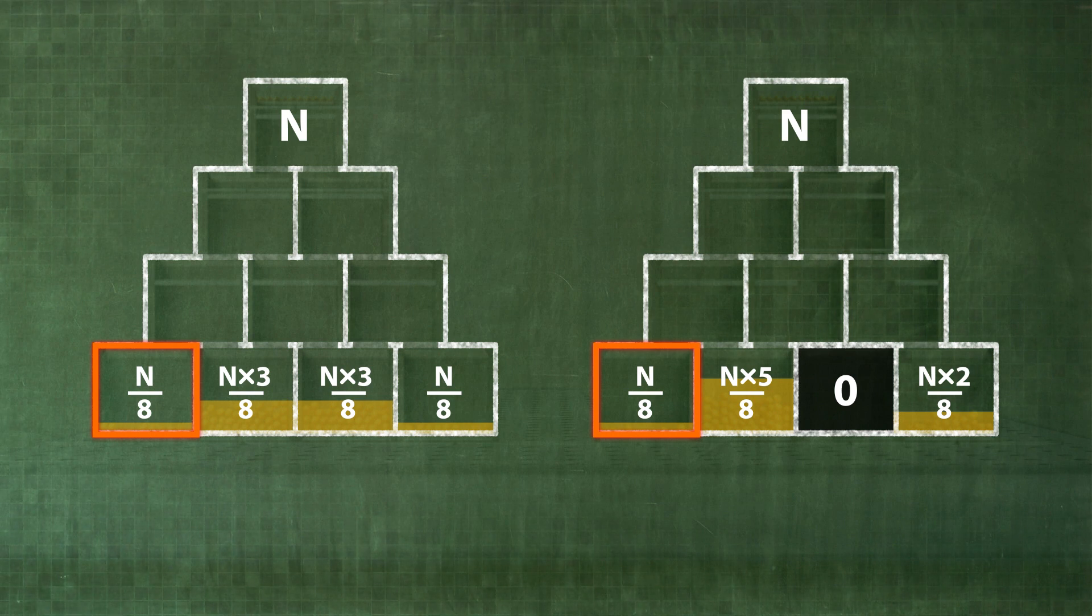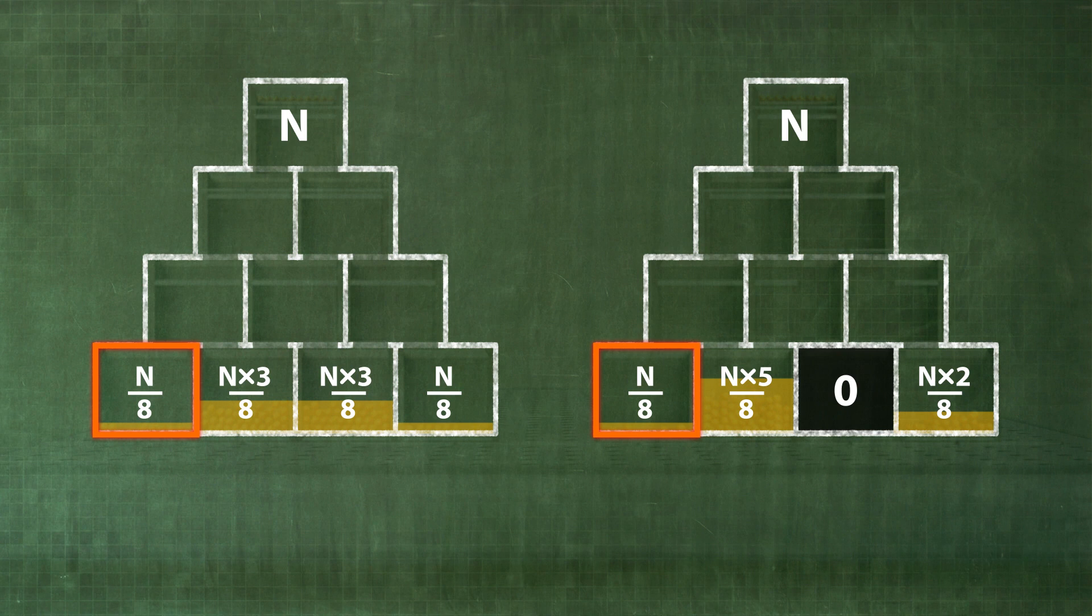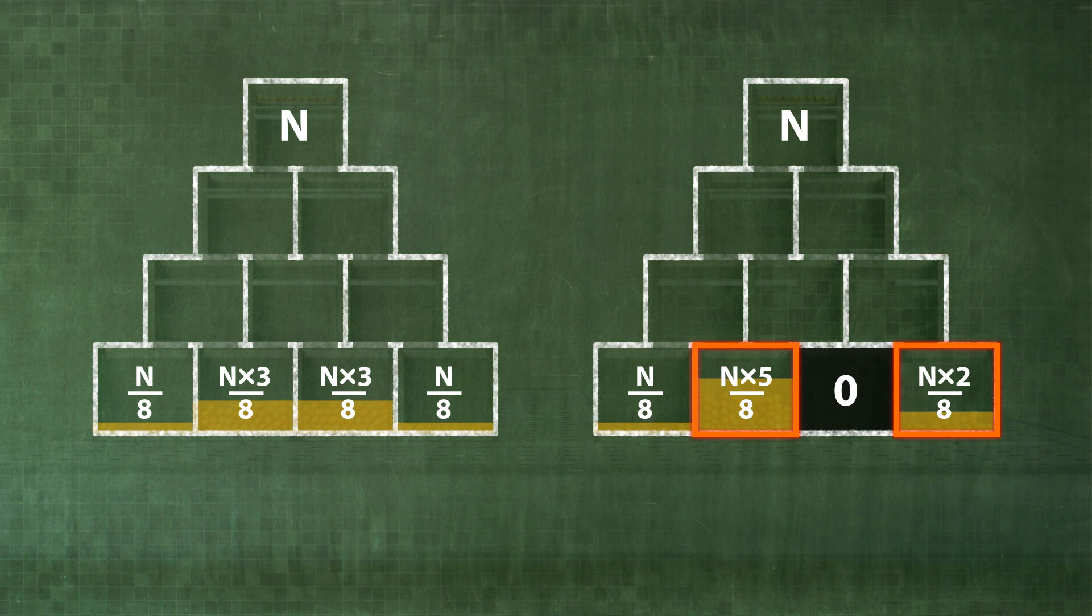In the right-hand pyramid, the opening and blocking of the box already prior to taking the measurement has led to a local change in the probabilities. Only the probabilities of the directly adjacent boxes are affected.